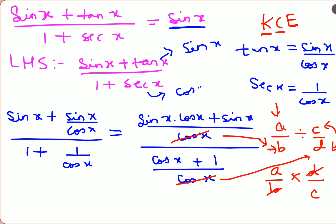So this and this gets cancelled. Now basically your numerator has just sin x times cos x plus sin x, over 1 plus cos x.